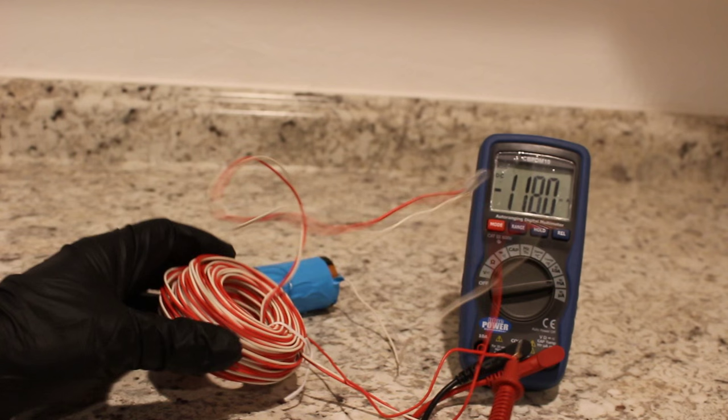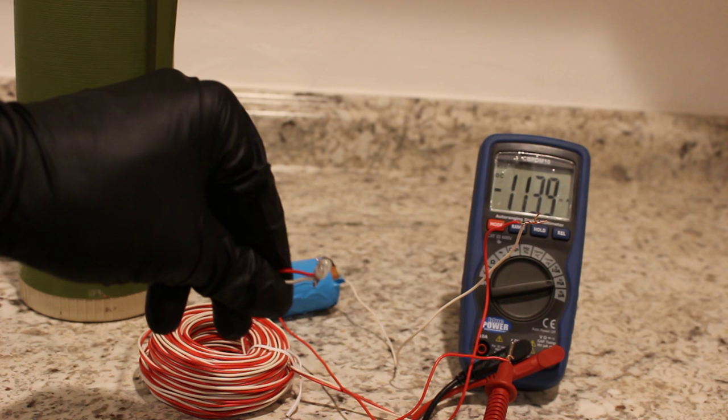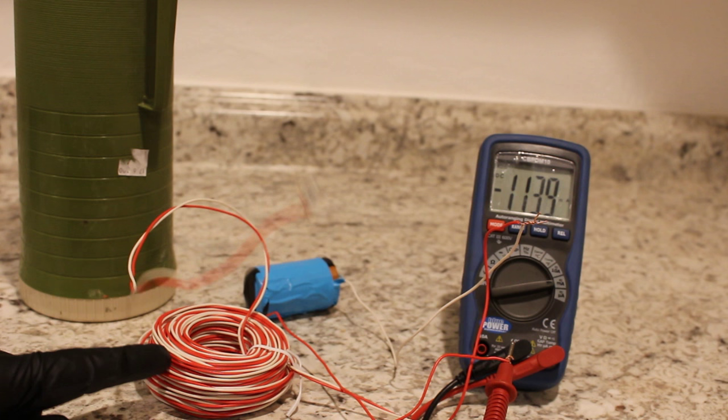But it got me thinking, what would happen if I actually did cool this wire off as cold as I could get it, say with some liquid nitrogen? Would this light get brighter? Would I be able to put more current through it because the resistance of the wire actually decreases?